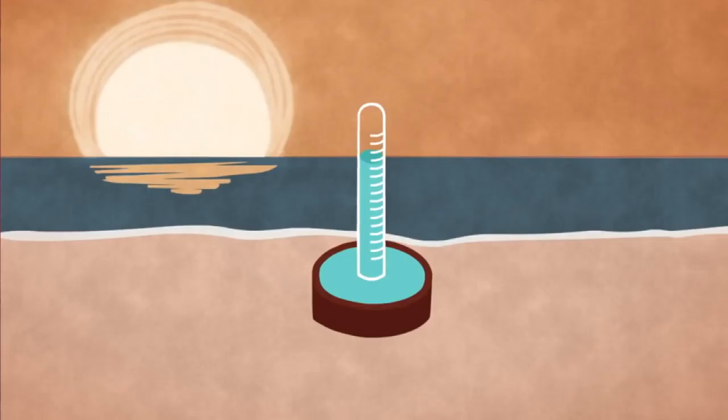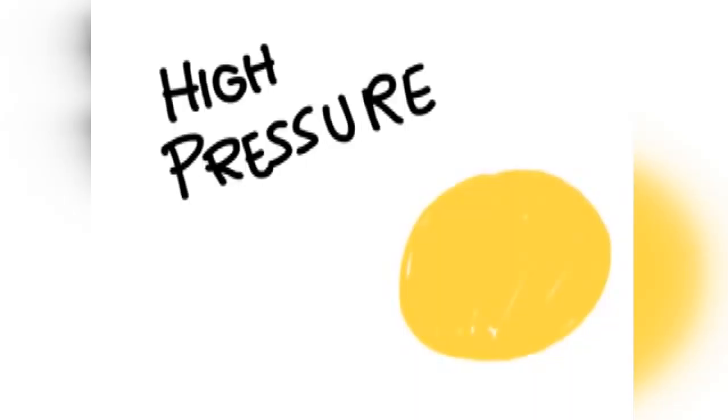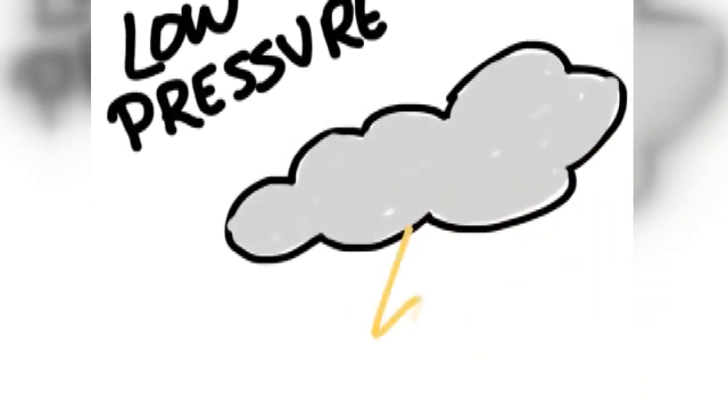A barometer tells you whether the air pressure is rising or falling. A rising barometer means sunny and dry conditions, while a falling barometer means stormy and wet conditions.